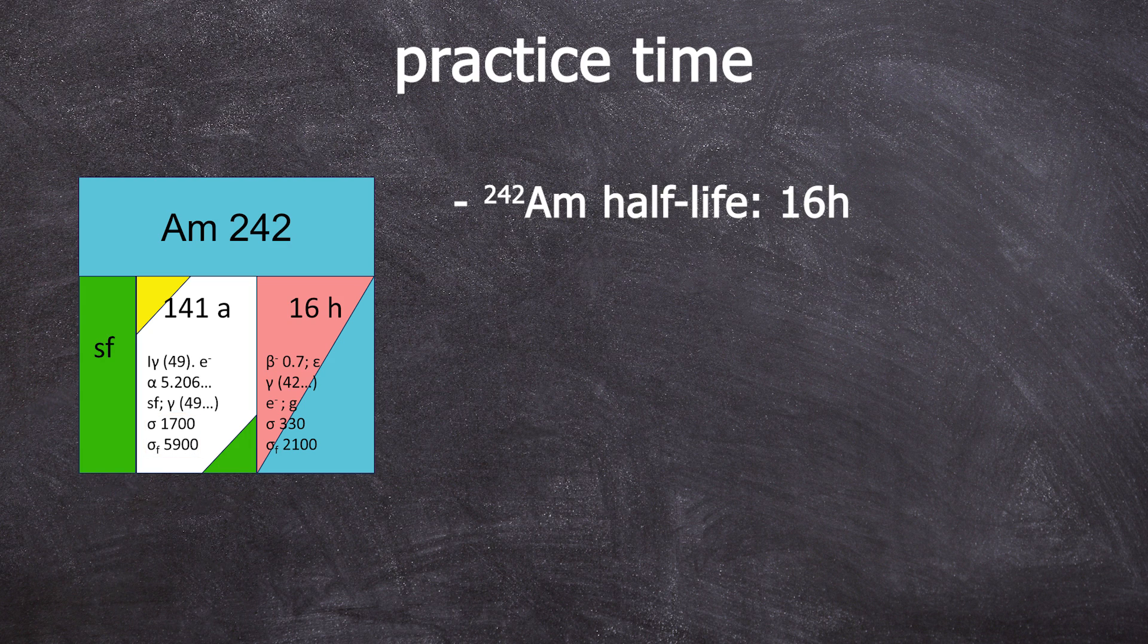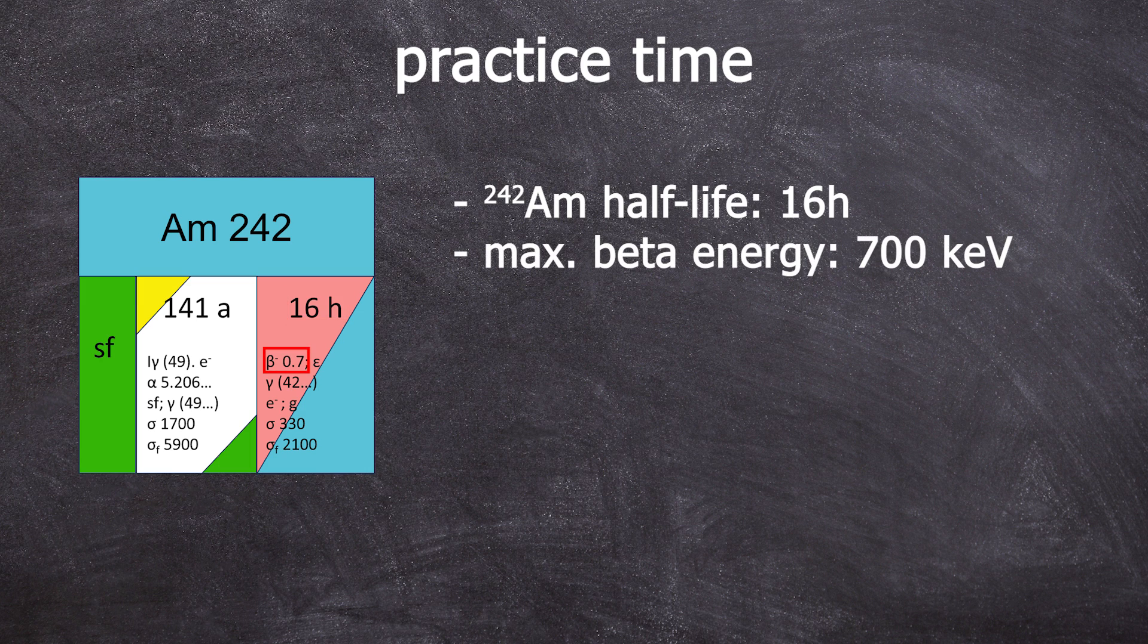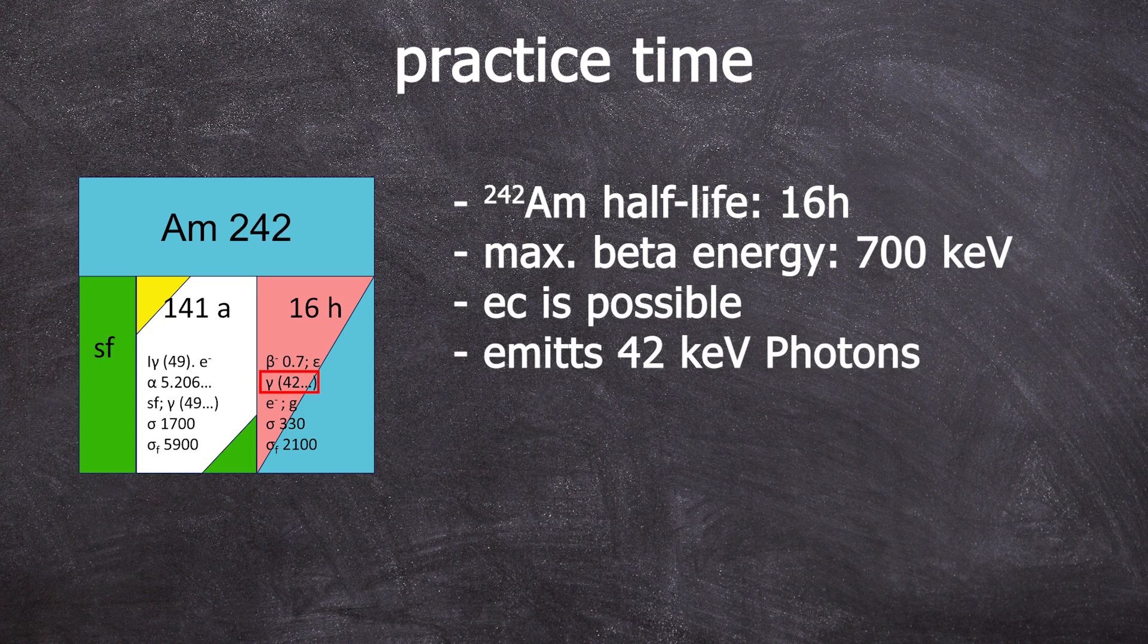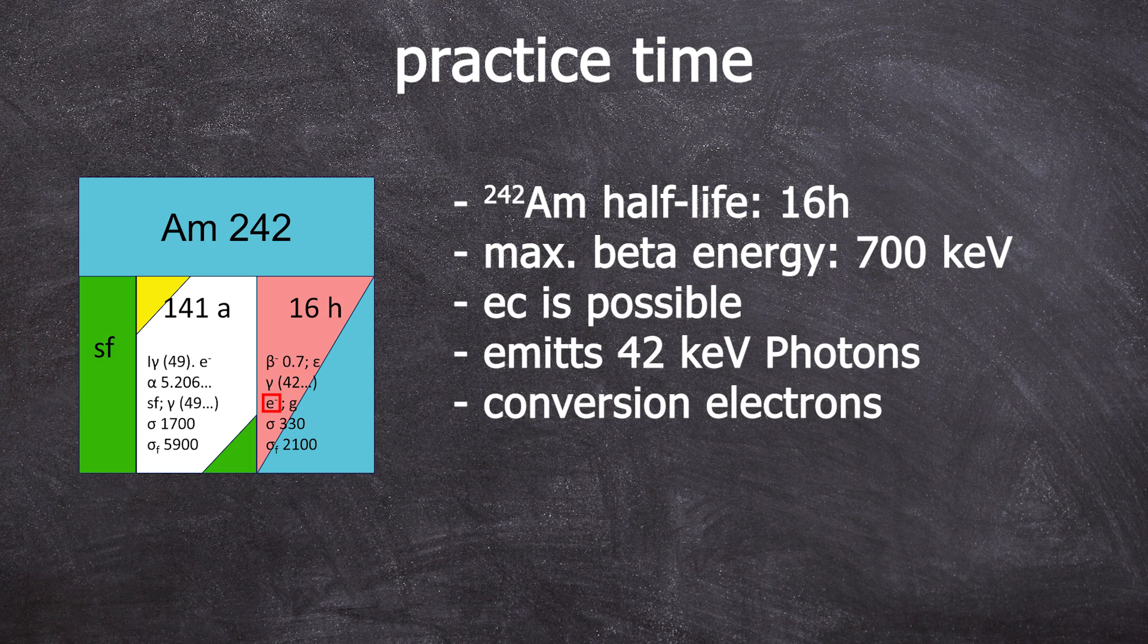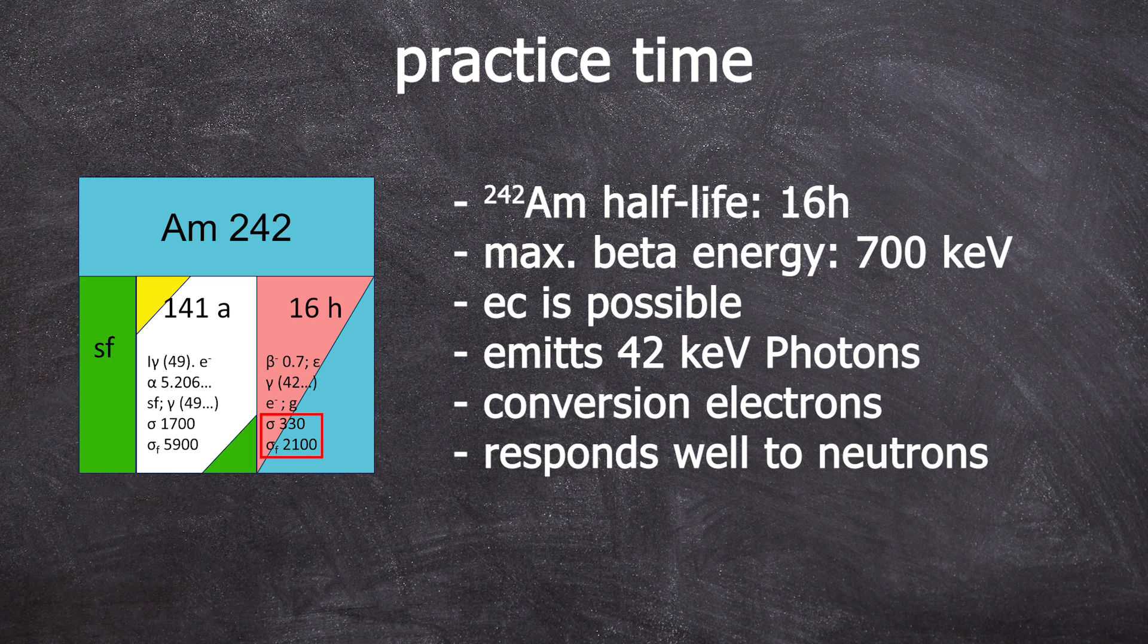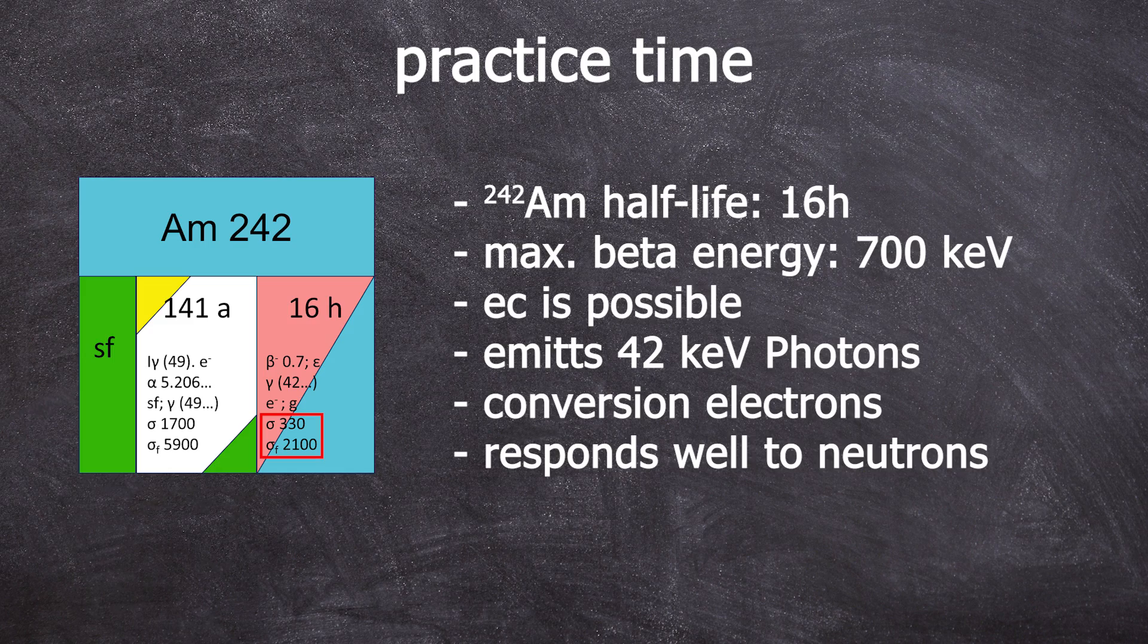Americium-242g has a half-life of just 16 hours. That is quite unusual but it happens that the metastable state is more long-lived than the ground state. It can decay between 5 and 95% via beta decay. The electrons in the beta decay can have a maximum energy of 0.7 mega electron volts. Electron capture is also a possibility and the emission of gamma photons with an energy of 42 kiloelectron volts is possible but to less than 1%. Also conversion electrons can be observed and americium-242g decays into the ground state of its daughter nucleus. The cross-section for the N-gamma reaction with thermal neutrons is 330 barns and the neutron-induced fission cross-section is 2,100 barns.